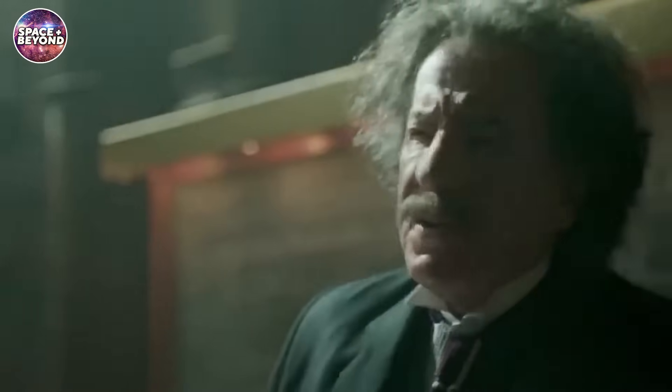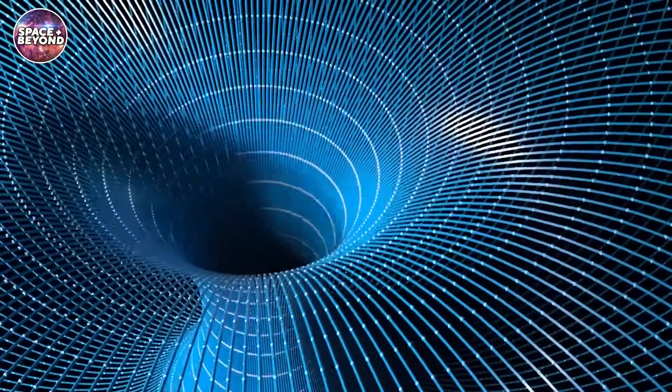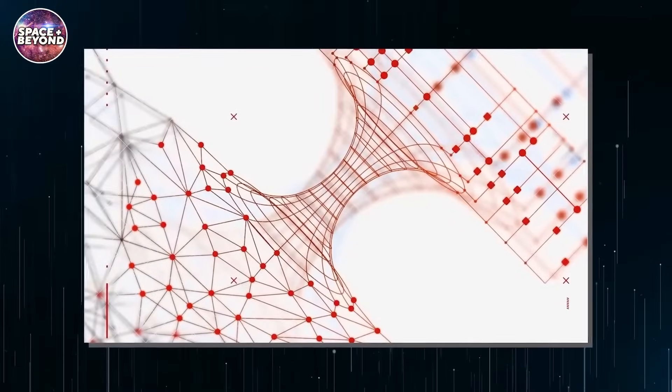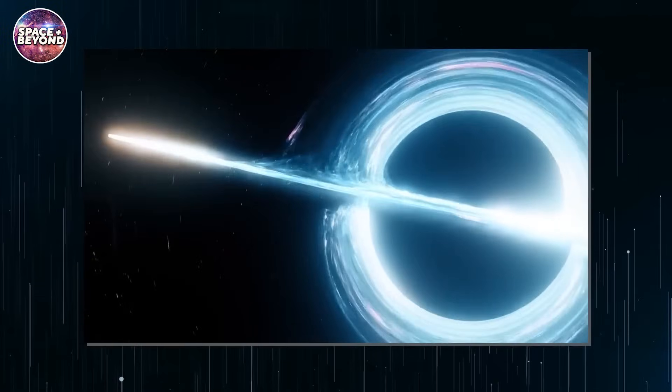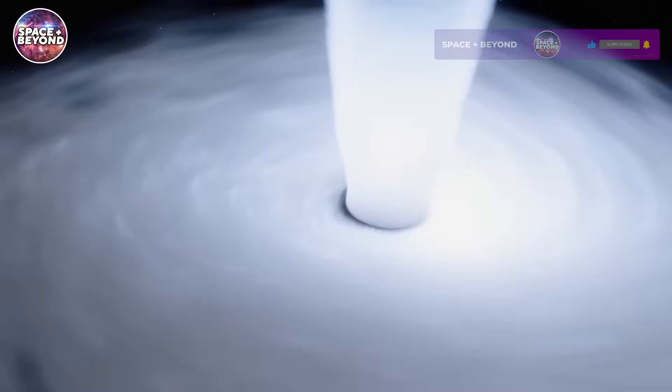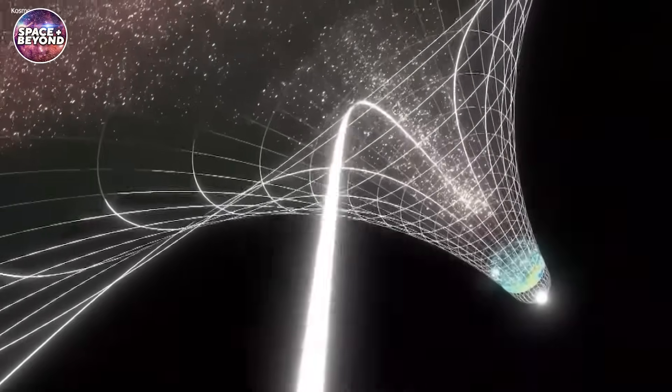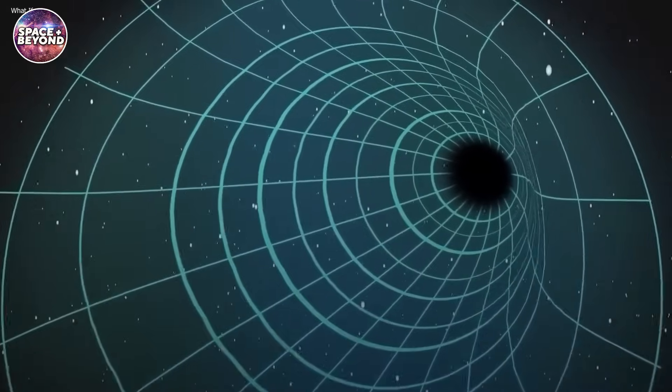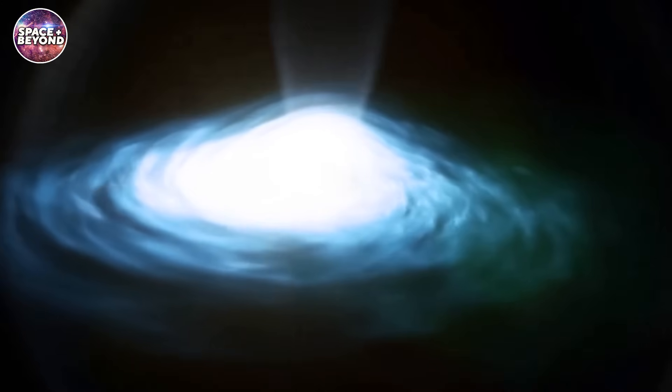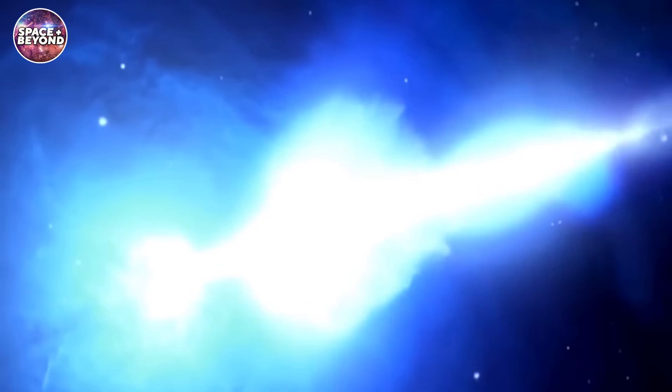An Einstein-Rosen bridge is what has been widely termed in mainstream media as a wormhole: a cosmic shortcut connecting two distant parts of the same universe, or even two parallel universes. But the question is, what is a white hole? According to renowned physicist Michio Kaku, a white hole is the stellar opposite of a black hole. In the same way nothing can ever escape the event horizon of a black hole, nothing can ever enter the event horizon of a white hole. It is believed to be a stellar object that constantly spits out energy and light.